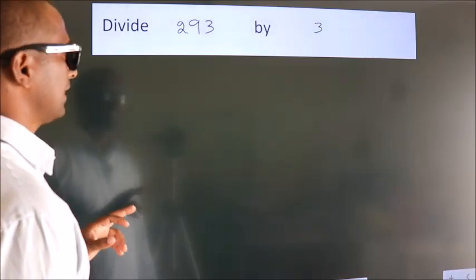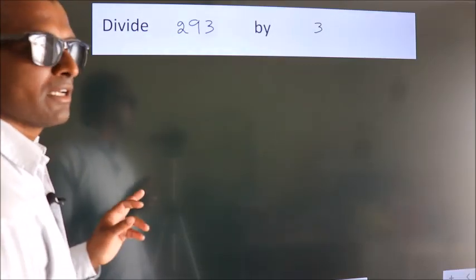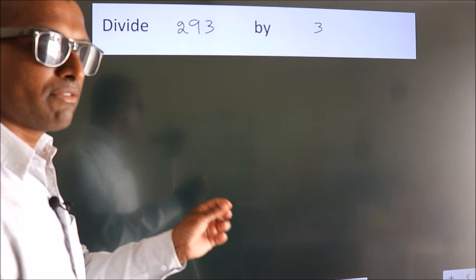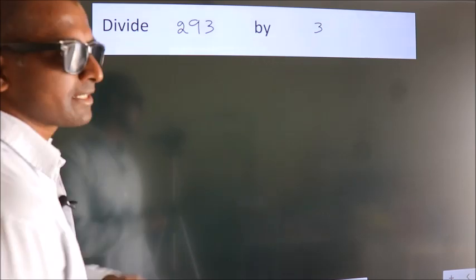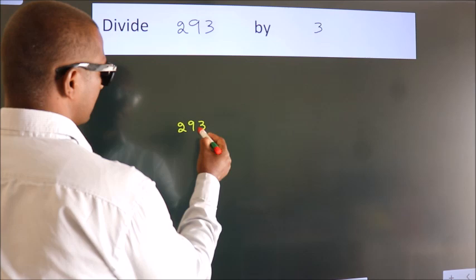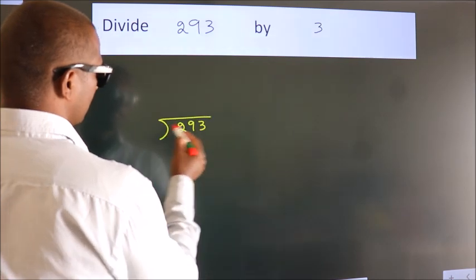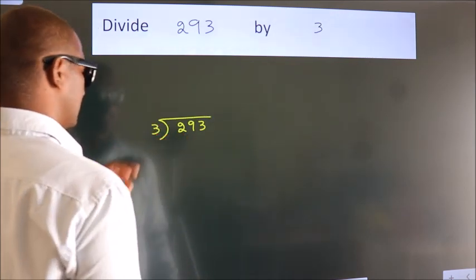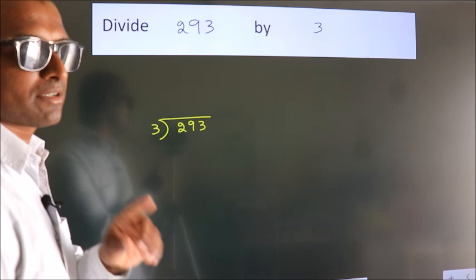Divide 293 by 3. To do this division, we should frame it in this way. 293 here, 3 here. This is your step 1.